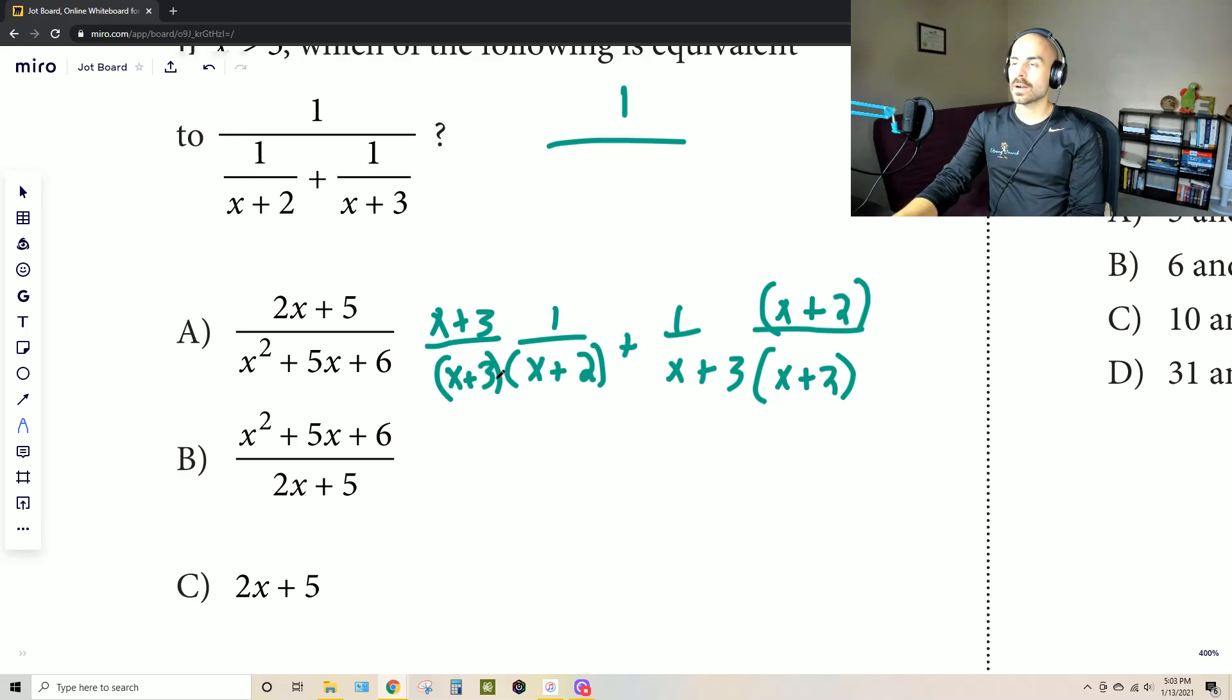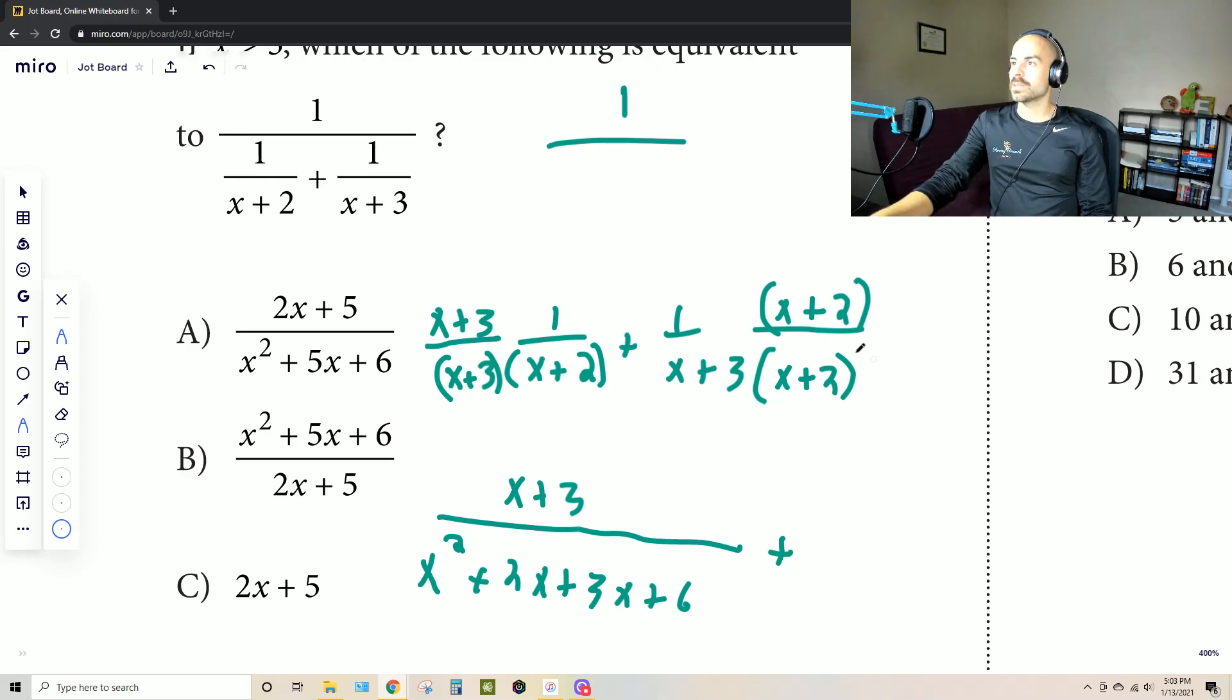And so what we see is that we'd have x squared plus 2x plus 3x plus 6. And that's in our denominator. That's our new denominator for this. And then 1 times anything is just itself. And then plus here. And then we know that since we're multiplying by the same thing, the denominator is going to still be the same. x squared plus, well, this comes together to become 5x. So 5x plus 6.